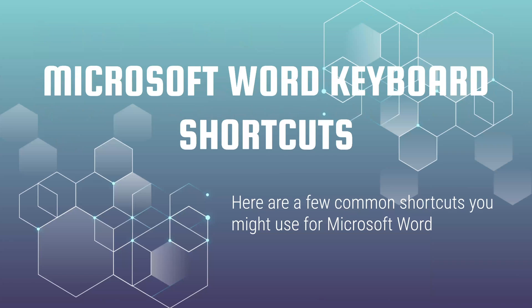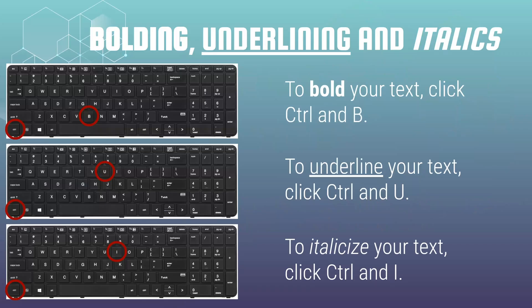Do you want to use Microsoft Word with shortcuts? There are many that are useful in Microsoft Word. If you want to bold, underline, or italicize your text, you can easily just take the first letter of what you're trying to do. For example, if you want to bold your text, you're going to tap control and B. Or for underline, you're going to click control and U. The easy way to remember it is to take the first letter of those words and use the control key with that letter.